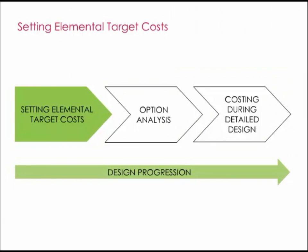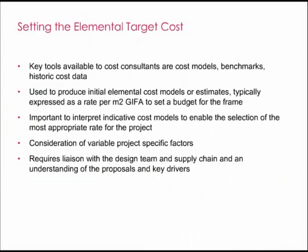The setting of the initial elemental budget for the frame and other building elements typically occurs during the very early stages of the project to determine the feasibility of the project against the overall construction cost budget. At this early stage, there is minimal design information available and the purpose is to set a realistic target cost that the design can develop within. During feasibility, as measurement is generally limited to overall floor areas, cost consultants typically use in-house or published cost models, benchmarks based on similar building types and other historic cost data to inform a rate per meter squared gross internal floor area. It is vital to engage with the other members of the design team to gather as much information as possible and to consider those key project-specific factors that vary from project to project, enabling an assessment of where the proposed project fits in relation to the standard ranges.